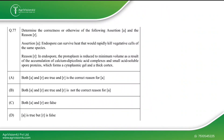The next question asks to determine the correctness of the following assertion and reason. The assertion is: endospores can survive heat that would rapidly kill vegetative cells. We all know endospores are heat resistant — they can survive up to high temperatures compared to vegetative cells, which get killed rapidly.